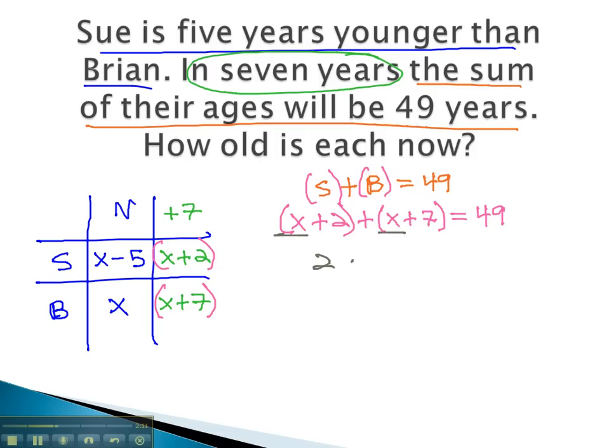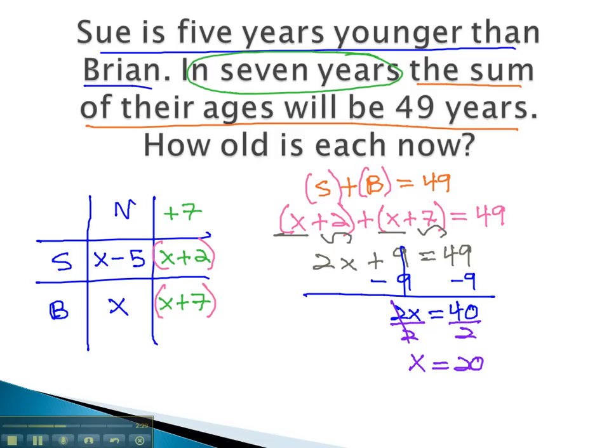This gives us an equation we can quickly solve. First, we can combine like terms. 2x plus 9 equals 49. Subtracting 9 from both sides will give us 2x equals 40. Dividing both sides by 2 will tell us that x equals 20. Recall from our table, we said x was Brian's age. Sue is x minus 5, or 20 minus 5. This means Sue is 15 years, and Brian is 20 years.